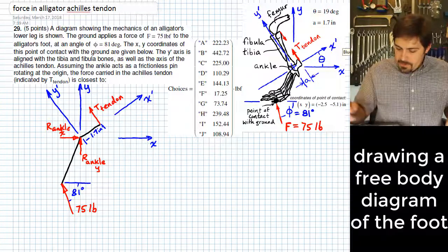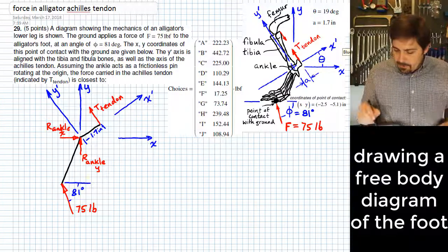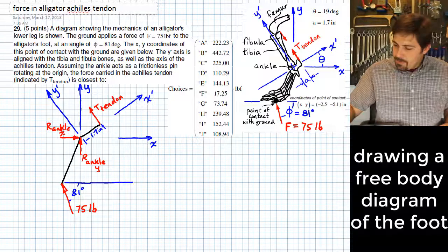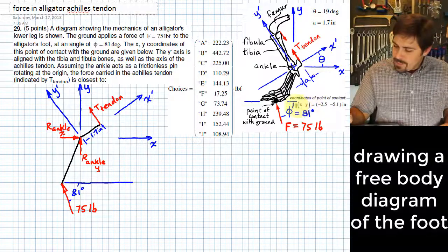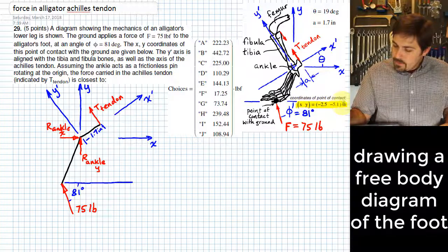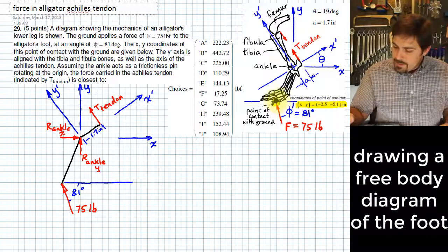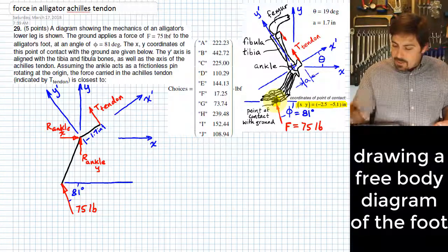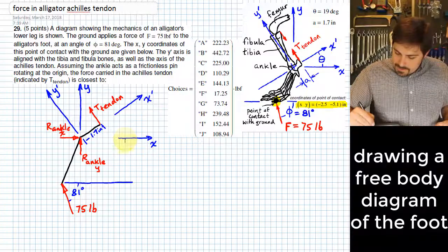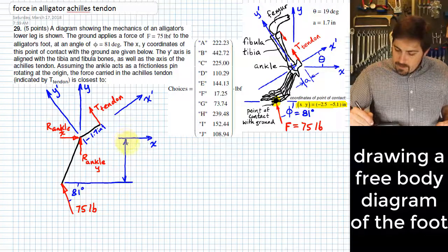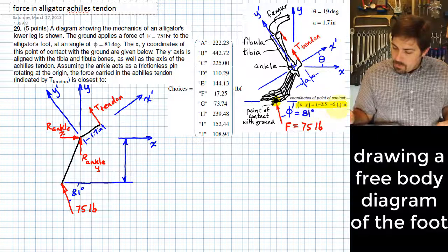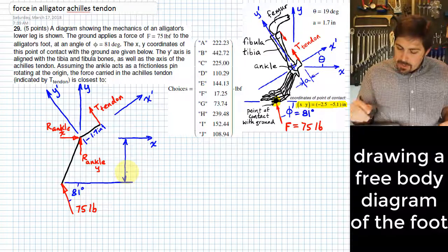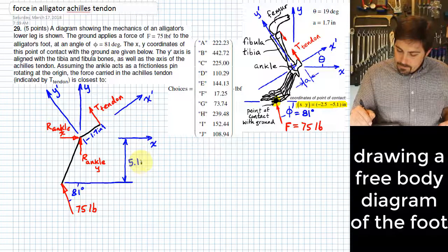So the next thing we need to do is probably the difficult part for most people, and it's to understand that we are given a couple of pieces here of coordinate data, X and Y coordinate data, for where this point is where the foot makes contact with the ground. And so what we're going to do with that information is actually apply those as a couple of dimensions on this diagram. If the Y coordinate is negative 5.1 inch, that means we're 5.1 inches below that X axis.